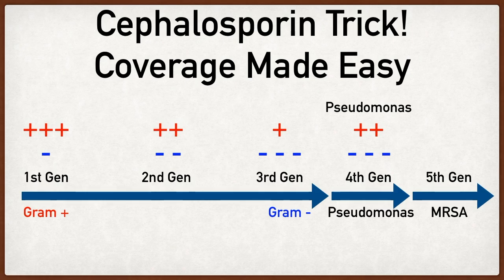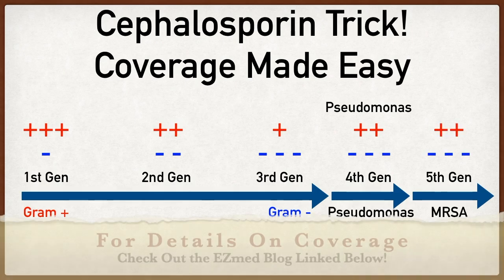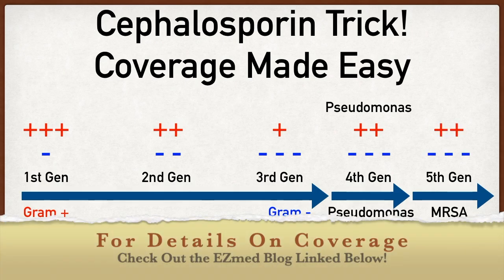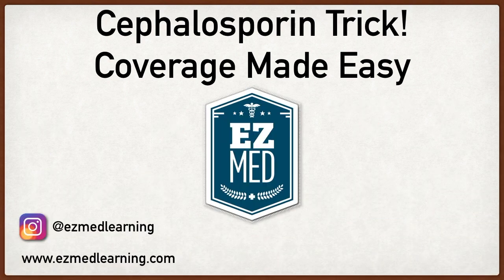Moving on to the final arrow, which represents fifth generation medications — we still have really good gram negative coverage and decent gram positive coverage. The key difference here is that we're now adding MRSA coverage, and that's why the last arrow is labeled that way.